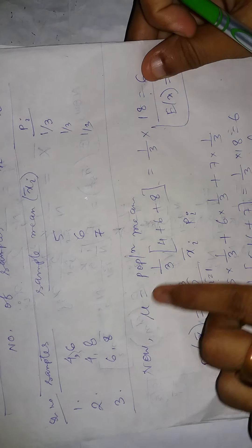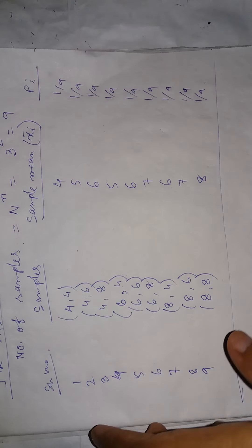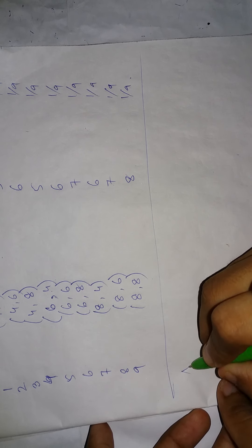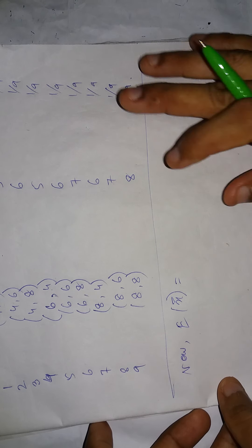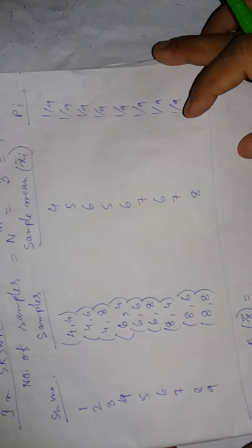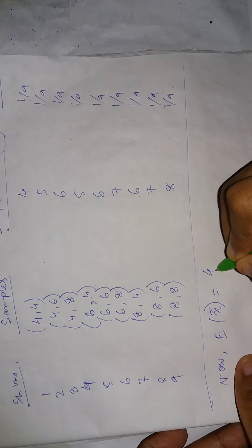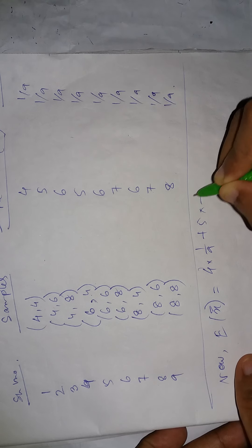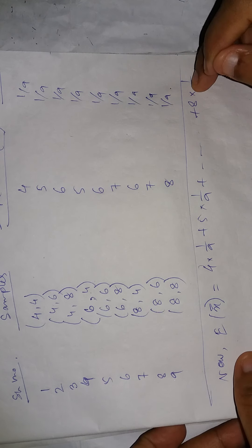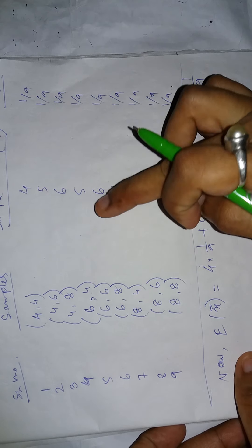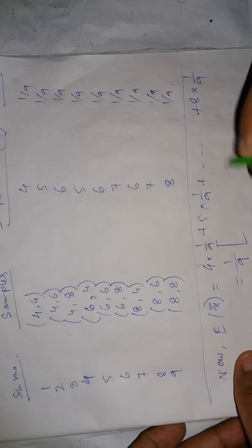Next we will calculate the expectation of small x̄. The expectation of sample mean uses the formula: expectation equals sum of x̄ᵢ times probability. So we multiply each sample mean by its probability: 4 into 1 by 9 plus 5 into 1 by 9 up to 8 into 1 by 9. We multiply and add all these terms.